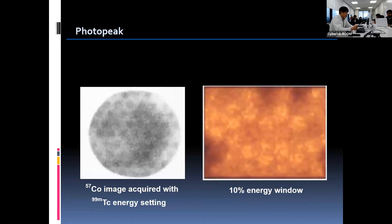These images show the error that occurs when we use the wrong energy setting. The image on the left is obtained when we acquired the cobalt source with the technetium energy setting — PM tubes are visualized, which is undesirable. The error in the right image happens if we use too narrow an energy window. The shape of the PM tubes is also visualized, and there is some decreased intensity on the upper margin and on both sides.